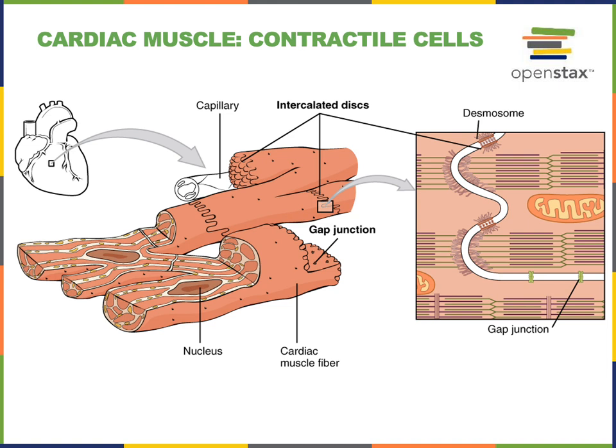The striations are alternating light and dark bands resulting from the overlapping thick and thin filaments arranged into sarcomeres. Another feature of cardiac muscle is that there are intercalated discs — the junctions where two contractile cells meet.